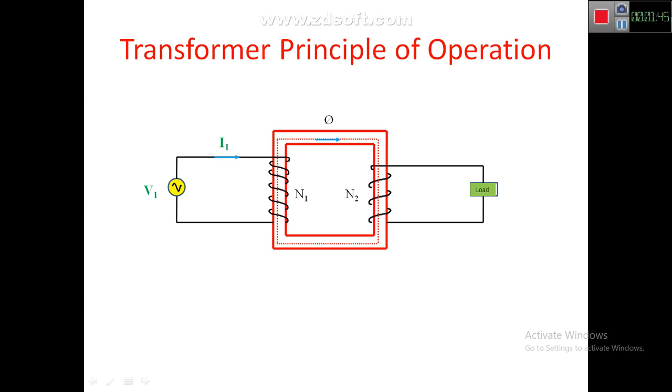As V1 is alternating voltage, current I1 should be alternating, and flux phi is directly proportional to the current passing through the coil. So flux phi should be alternating. As flux phi is alternating, according to Faraday's laws of electromagnetic induction, there is some EMF induced in the primary coil.